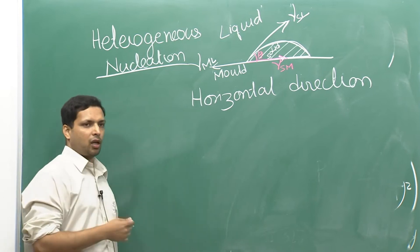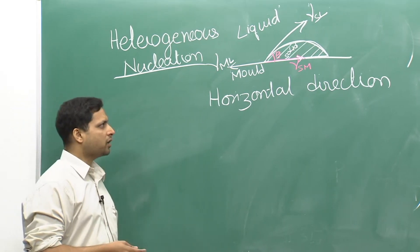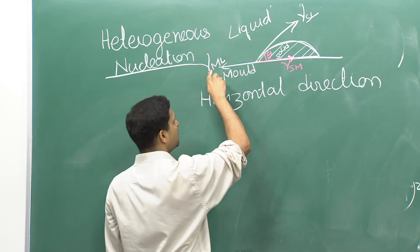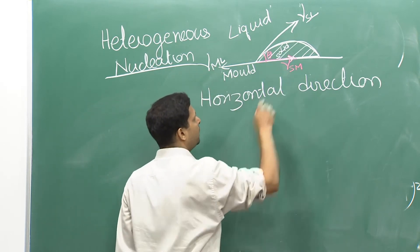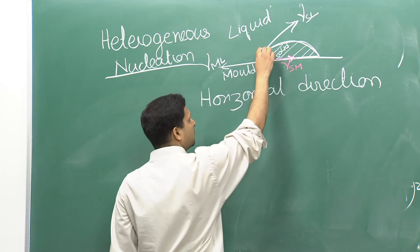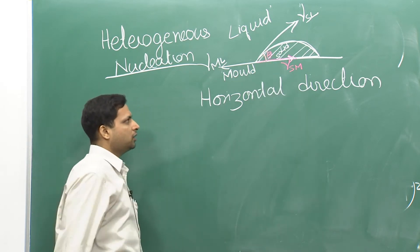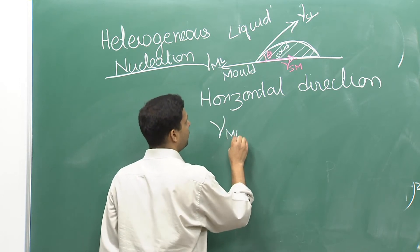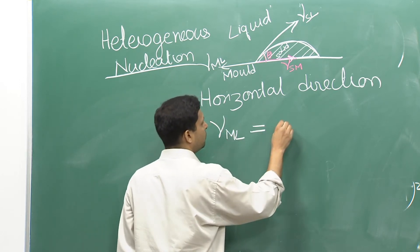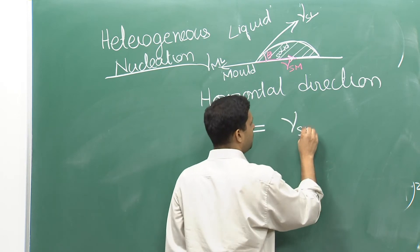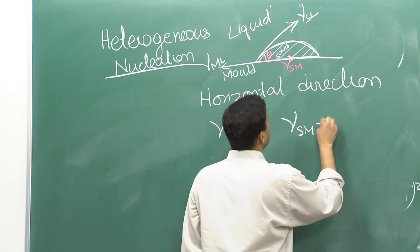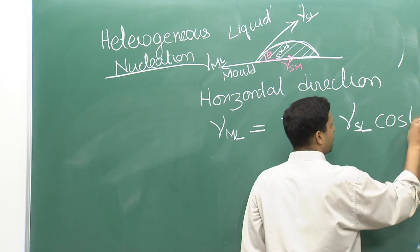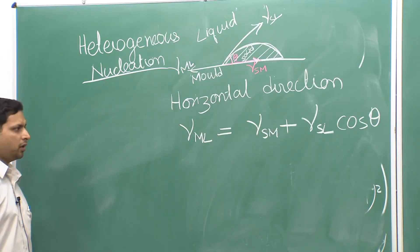To derive the equation for ΔG* and r*, we look at the three surface energy terms: γ_ML, γ_SL, and γ_SM. Since the contact angle is θ, in the horizontal direction we can say: γ_ML = γ_SM + γ_SL cos θ.